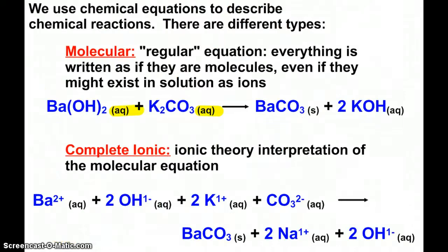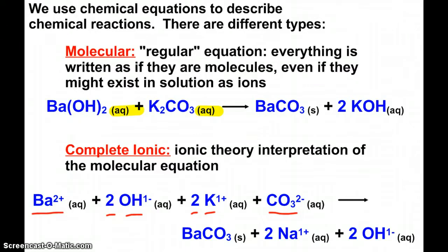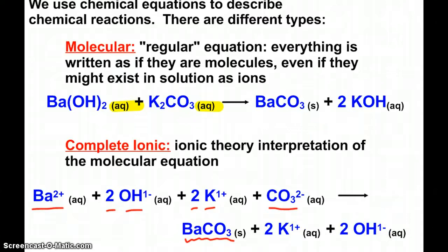The products are barium carbonate and potassium hydroxide. But since ionic compounds in water break apart into ions, what we can write is a complete ionic equation, taking into account the ionic theory we just discussed. Barium hydroxide breaks apart into the barium ion and two hydroxide ions. Potassium carbonate breaks apart into two potassium ions and a carbonate ion. Barium carbonate is insoluble, so it stays together as a solid. Two potassium hydroxides break into two potassium ions and two hydroxide ions.